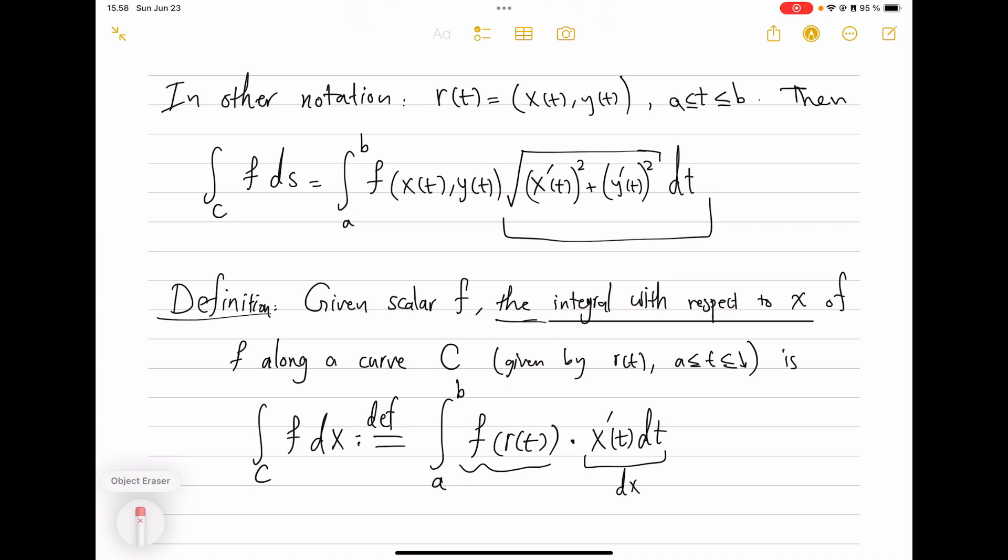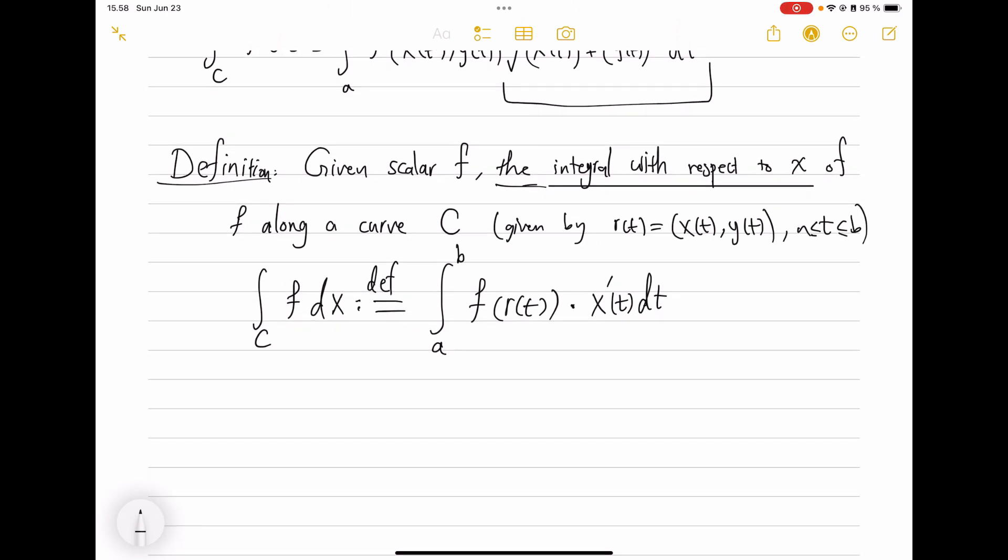So all of this is dx. So this is dx replacing that, and f here replaces that, so formally everything matches. Except that in this definition I don't have an x—it's given by a formula x(t), y(t). If your curve is given this way, this is what we mean by integrating against x. Similarly, integrating f against dy would be ∫[a to b] f(r(t)) · y'(t)dt.